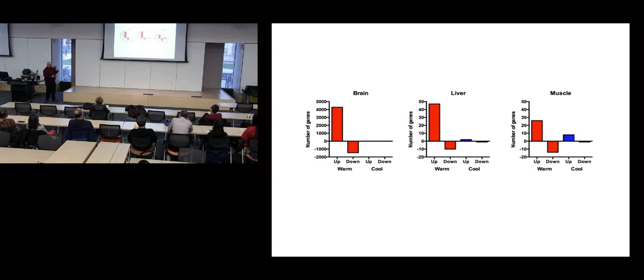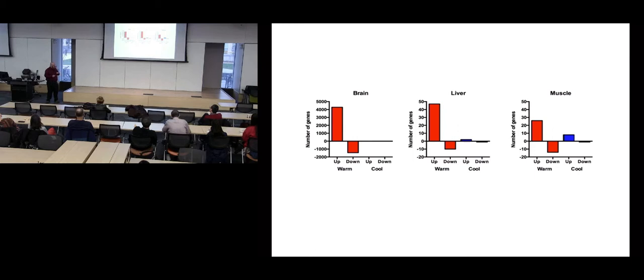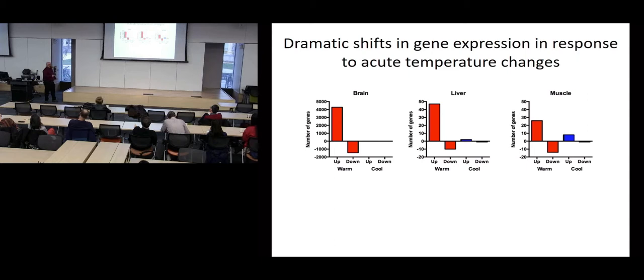Both patterns are probably explained by the fact that when temperature changes, protein misfolding is an issue — both on the warm and cool side. You're often expressing genes like chaperone proteins in order to respond to that changing temperature. So there are really dramatic shifts in gene expression in terms of the number of genes that are differentially expressed in response to acute temperature changes.